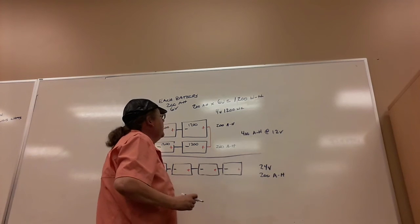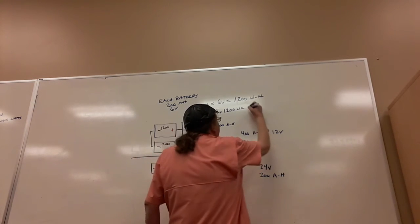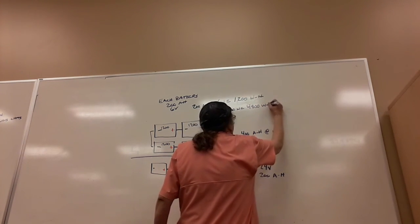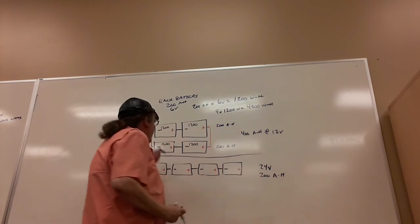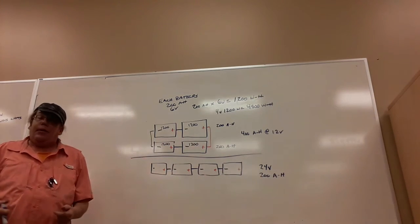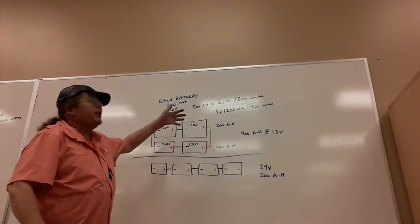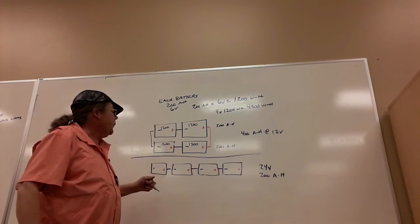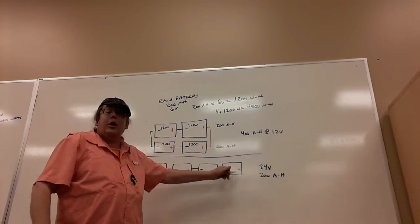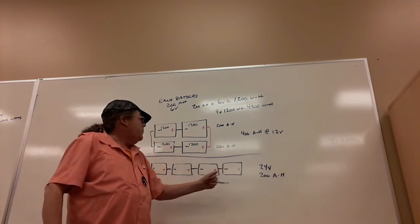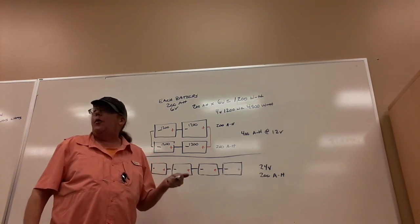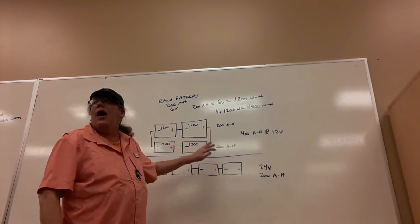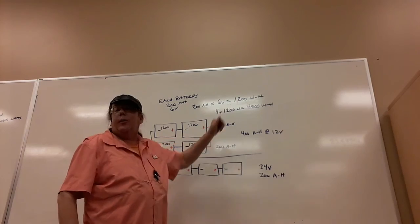And we get 4,800 watt hours for both of these battery banks, so they're identical. And once I explained the math to the guy, he was fine with it. And then he was happy to learn that actually with his 24-volt system, he has a little bit more storage capacity because everything runs more efficiently when you have a higher voltage and then lower amperage. But both of these battery banks are the same watt hour capacity. It's just the amp hour figure that's confusing.